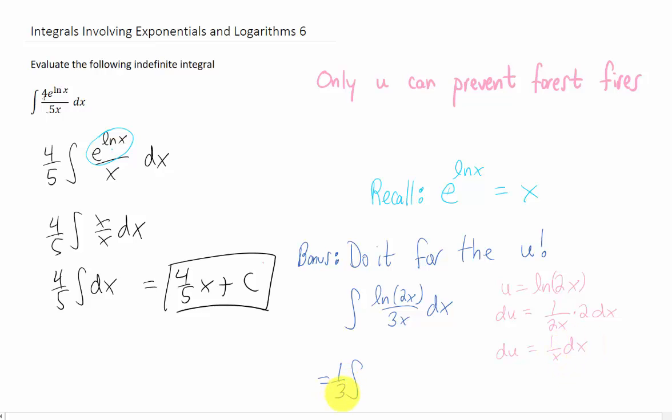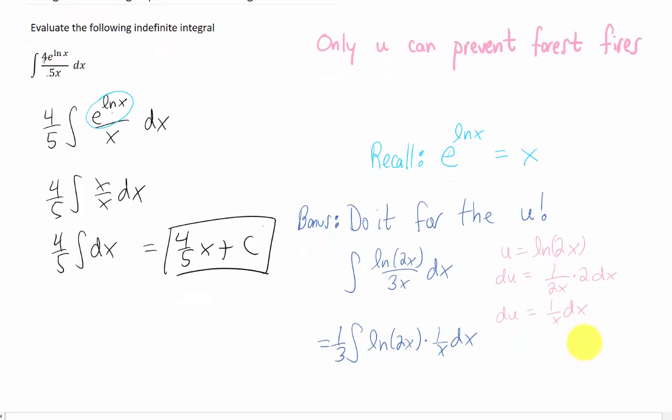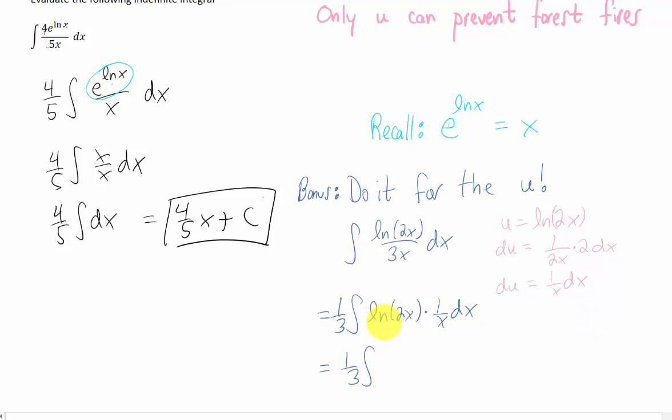Now, if we pull 1 third out of this integral and we rewrite our integrand in this form, then we can more clearly see that what we're dealing with here is a u right here and a du right here. We can integrate u du.